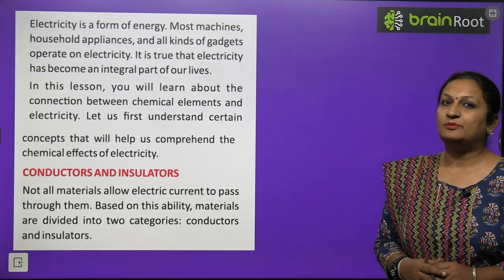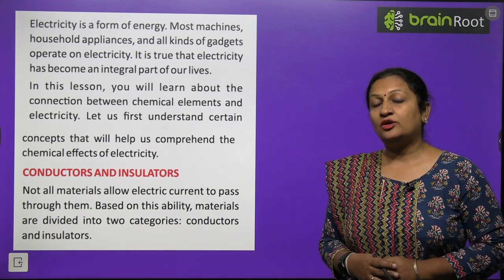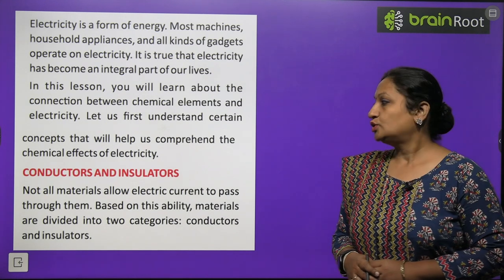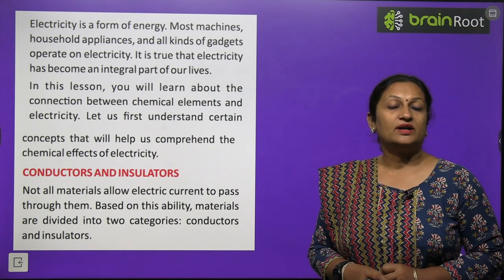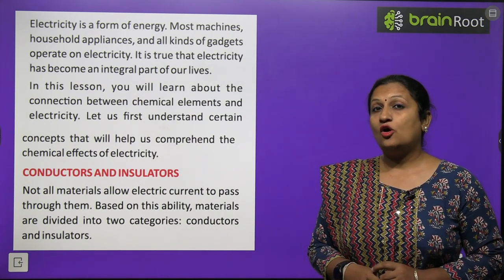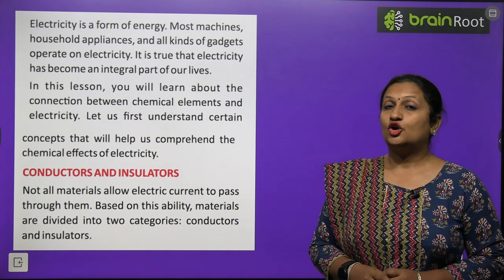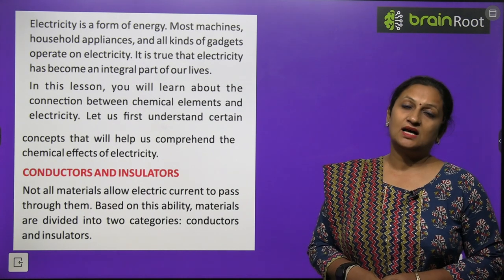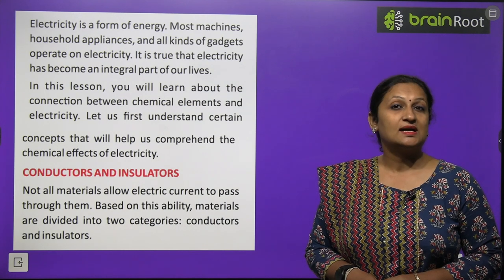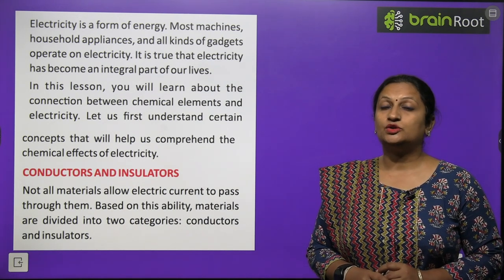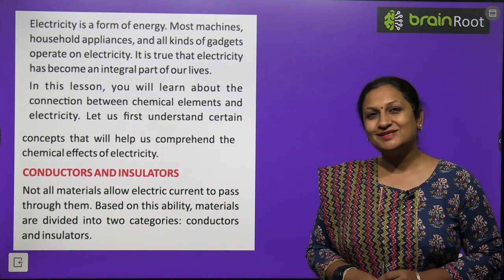We can talk about materials in two categories on the basis of conduction. One we will call conductors and the other we will call non-conductors, or insulators. Conductors are materials which allow electric current to pass through them. All metals are good conductors of heat as well as electricity. Materials which do not allow electric current to pass through them are called poor conductors or insulators — like plastic and wood.